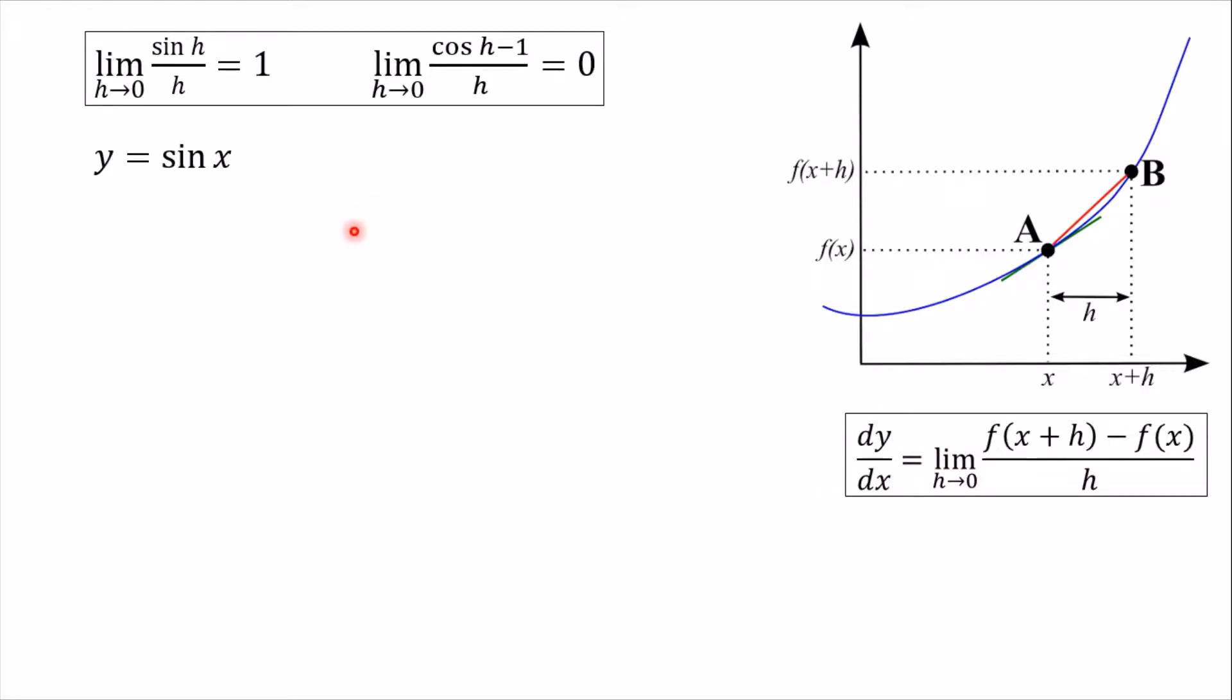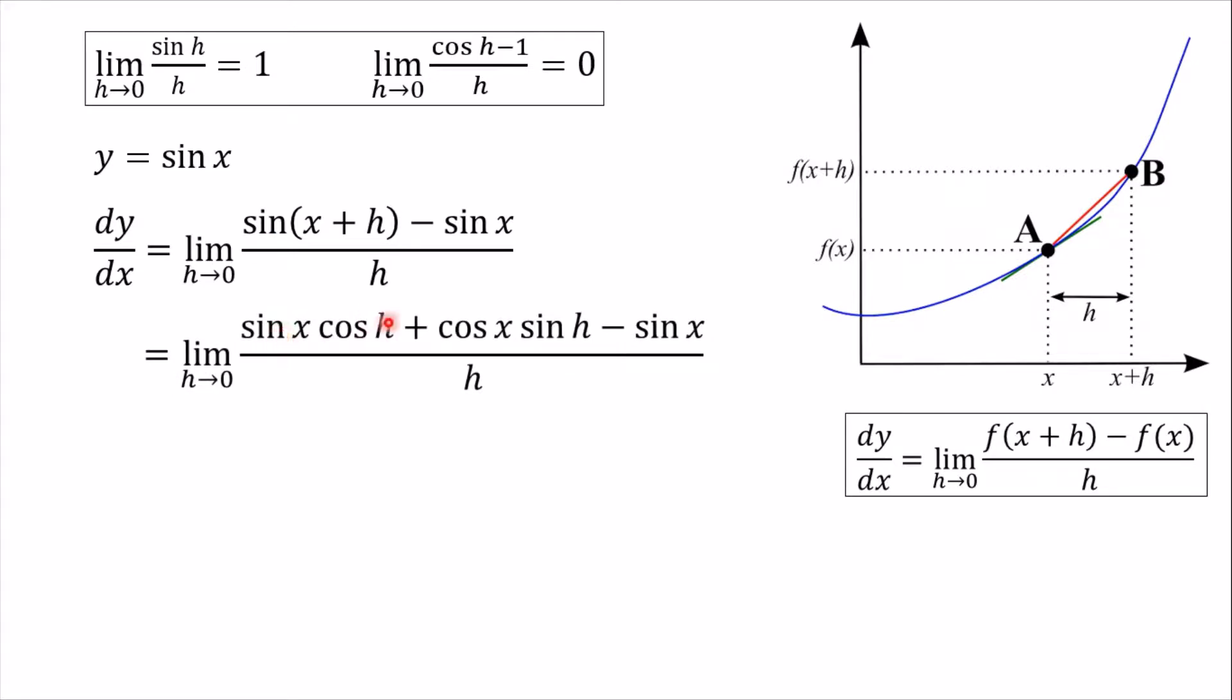So let's plug in our function, which is sine x into this formula. So we can say that the derivative of y, dy by dx, is the limit as h tends towards zero of, and it's f of x plus h. So for this function, sine of x plus h minus the function f of x, so minus sine x, and then all over h. So where can we go from there? Well, hopefully, when you look at a function like this, and you see this bit, you might think of the compound angle formulas, this is sine of something plus something. So we can actually expand this by using the compound angle formula. So we're going to get sin x cos h plus cos x sin h. Everything else stays the same. So we're still limiting h to zero. We've got the minus sine x and over h.